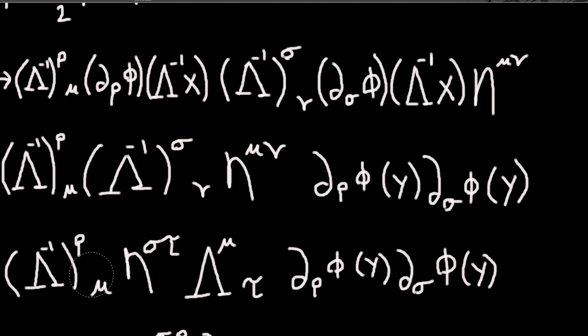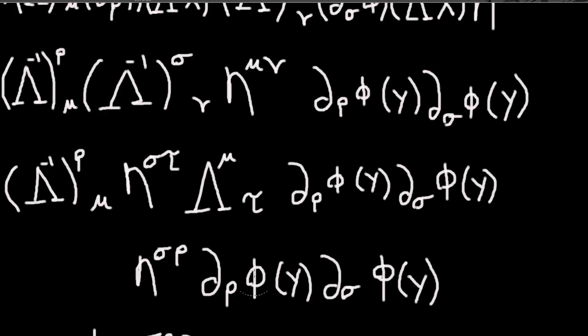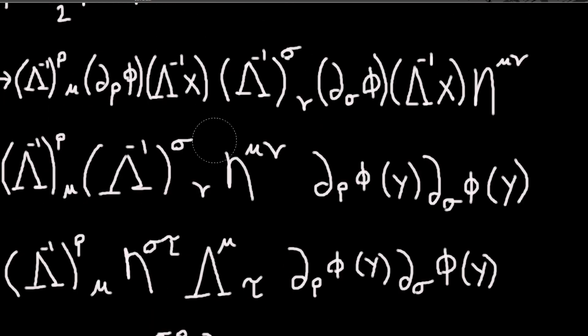And then this is again an inverse and lambda and its inverse multiplied together, and this will give me a delta rho tau. So I can replace this tau with a rho, and I will just get this. So this looks exactly the same as what I started with, only instead of the fields being evaluated at x, they're evaluated at y, which again is lambda inverse x.